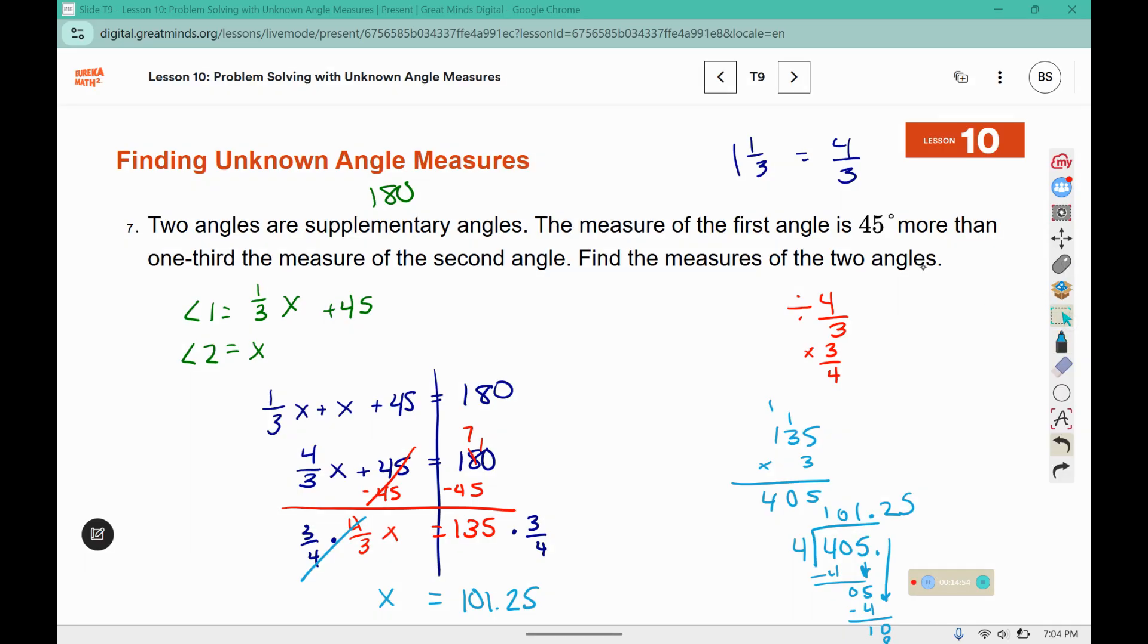Now I need to go back and find the angle measures. That was just solving it for x. So I need to plug it back in to these equations. So x is 101.25. The other one I need to do is 1 third times 101.25 and then add 45. So that's the same as dividing your answer by 3 and adding 45, which should give you 78.75.